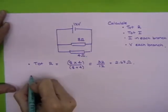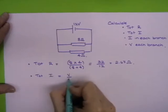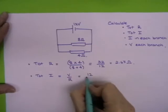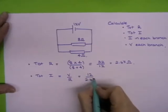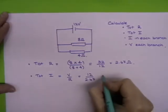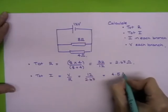So the next thing, the total current. You're just going to use V over R. The V value you're going to use is your total voltage over your total resistance. That gives you an answer of 4.5 amps this time.